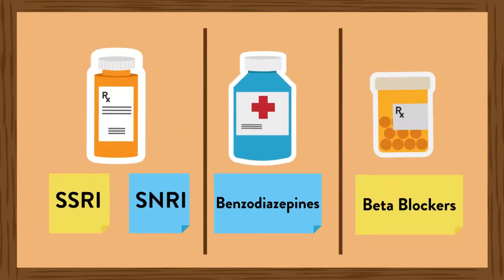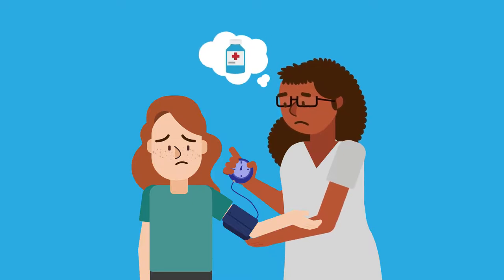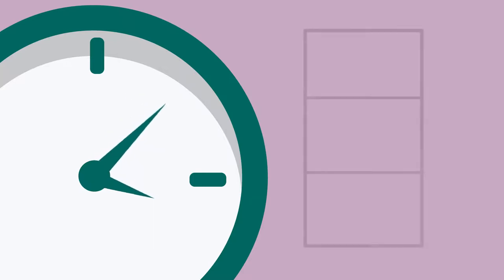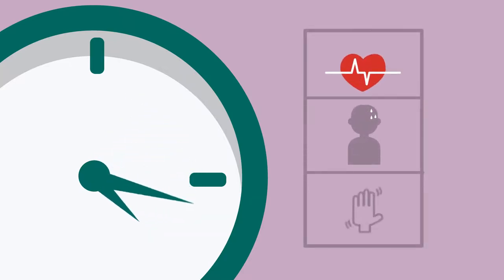Beta blockers are a type of medication usually used for high blood pressure or uneven heartbeat. They can also be effective for short-term reduction of anxiety symptoms related to heart rate, sweating, or shakiness.